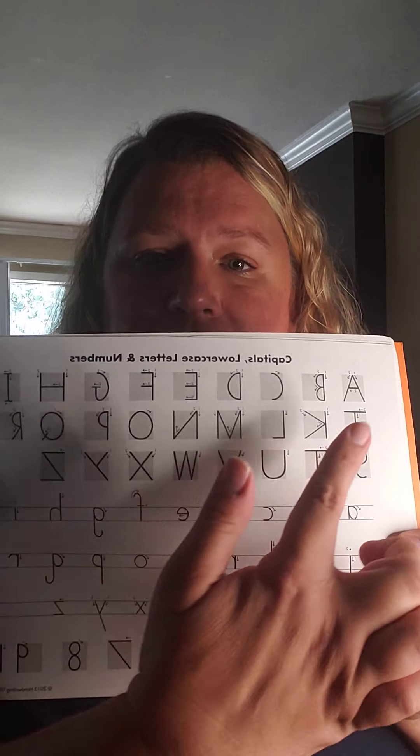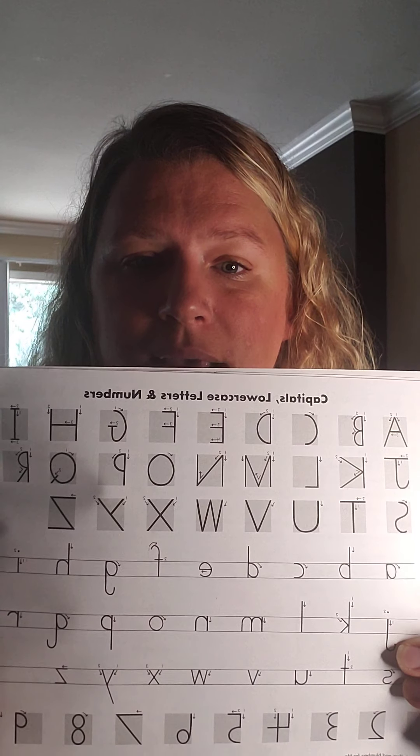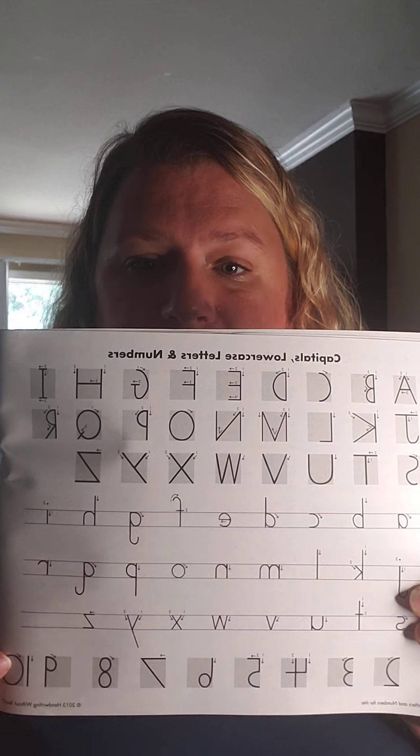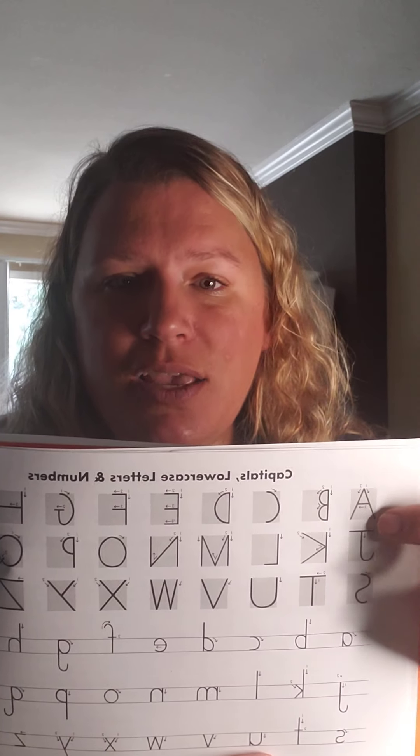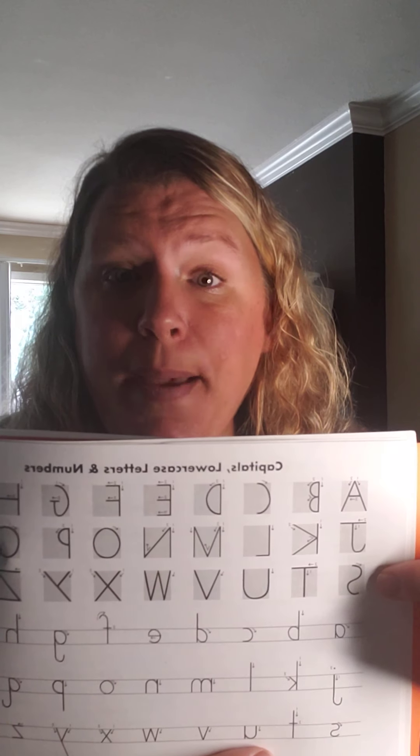The next page has all the capital letters, all the lowercase letters, and numbers one through ten. You'll notice there are gray blocks — they're like rectangles — with each capital letter in them. All capital letters are written in a gray block, and it makes it so that the letter fits in that gray block. When you're writing your capital uppercase letters, you'll make sure your letter fits in that gray block.